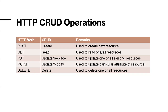Then we can move on to the PUT HTTP method, which is basically used to update or replace one or all existing resources. PATCH — in PATCH we can update or modify, and it is used to update a particular attribute of a resource.